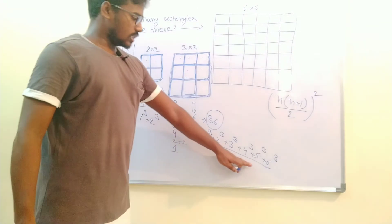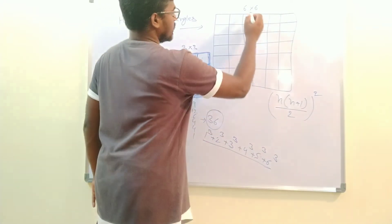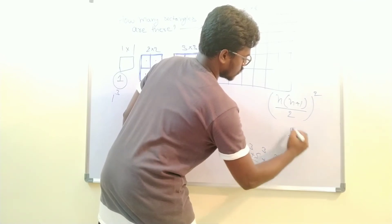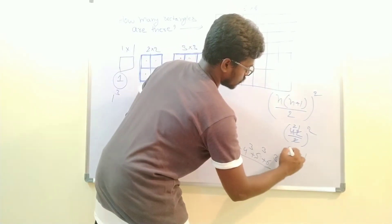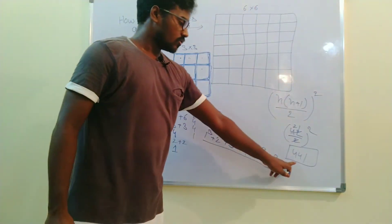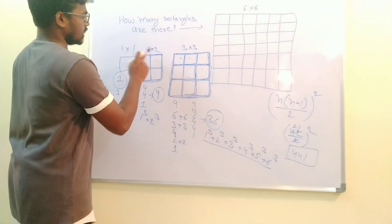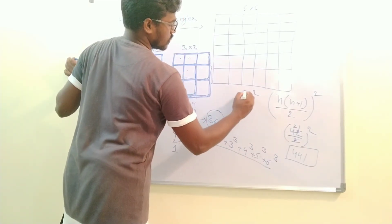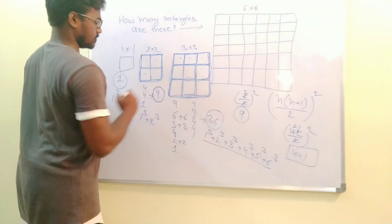For our 6×6 grid, n = 6. So we calculate: 6 × (6+1) / 2, which is 6 × 7 / 2 = 42 / 2 = 21. Then 21² = 441. So there are 441 rectangles in the 6×6 grid. Let's validate this formula with n = 2: 2 × (2+1) / 2 = 6/2 = 3, and 3² = 9. We got 9, which matches our earlier count — the formula is confirmed.